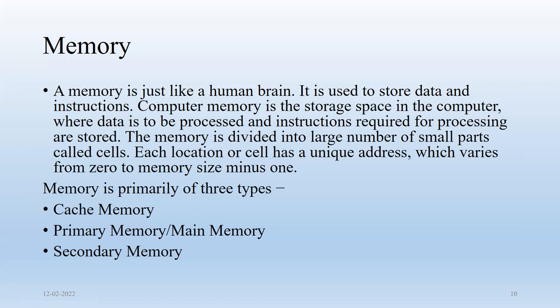For example, if you need to create eight cells and you name them starting from zero, it will be zero to seven. If you start from one, it will be one to eight — that's n minus one. Memory is primarily of three categories: cache (the fastest memory), primary memory, and secondary or main memory.